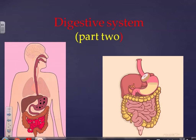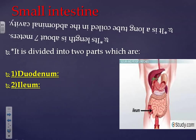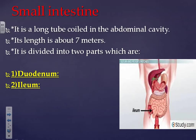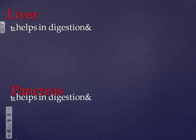Today we will complete the digestive system. Just after the stomach we have the small intestine. The small intestine is a long tube coiled in the abdominal cavity; its length is about seven meters. It is divided into two parts: a small part called the duodenum and a long part called the ileum, as shown in the figure. The ileum is folded around itself.